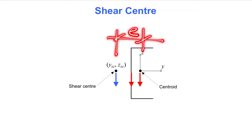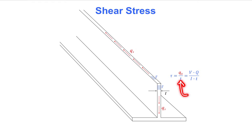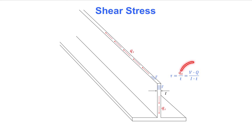The next slide calculates the shear stress from the shear flow. The shear flow Qs is force per unit length along the member. When we divide by the thickness T of the cross-section at a particular location, we get the shear stress. Shear flow is marked in red and shear stress in blue. Using the shear flow formula derived earlier, the shear stress at a location in the cross-section is VQ over IT.